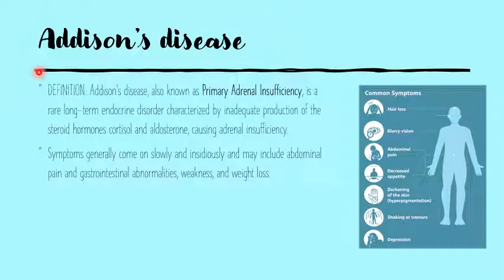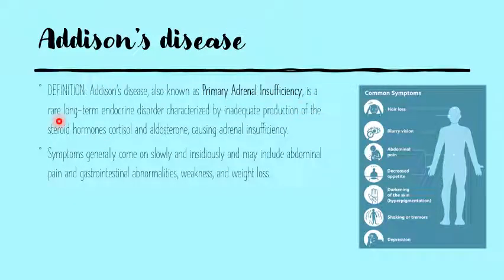Now let's move on to the diseases. First, we have Addison's disease, also known as primary adrenal insufficiency. It's basically a rare long-term endocrine disorder characterized by the inadequate production of both cortisol and aldosterone — essentially an adrenal insufficiency. Isolated hypoaldosteronism is actually quite rare, and typically when you do have hypoaldosteronism, it's going to be part of a disease like Addison's disease.